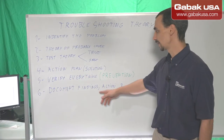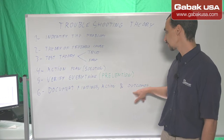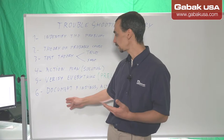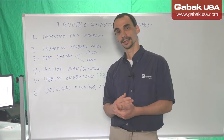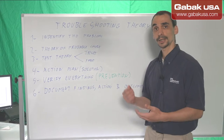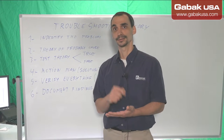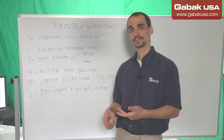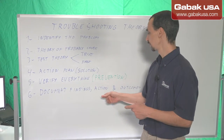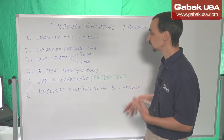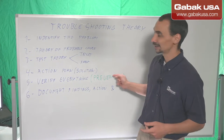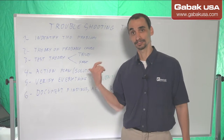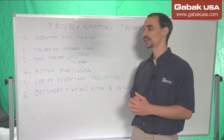Step number six: document findings, actions, and outcomes. You document everything — write down what happened. For example: I checked the power supply, replaced it, the quality was very bad, so I installed a new one. I also installed a UPS and everything is great. The outcome means I checked everything, it was all working, and I have the signature of the customer. The customer is happy — wonderful.